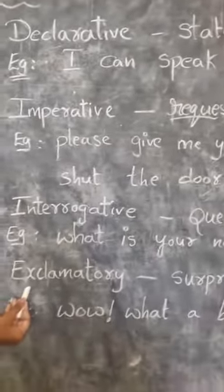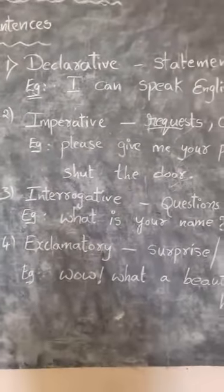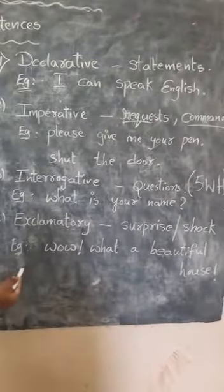The last type of sentence is exclamatory sentence. These are sentences which will show surprise or shock. For example, if you see a beautiful house, you will say, what a beautiful house.